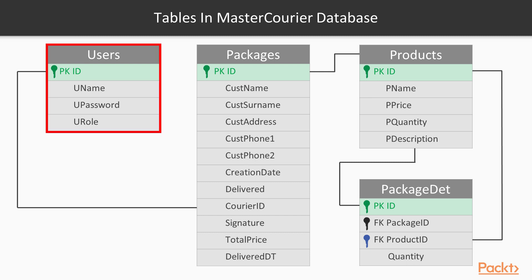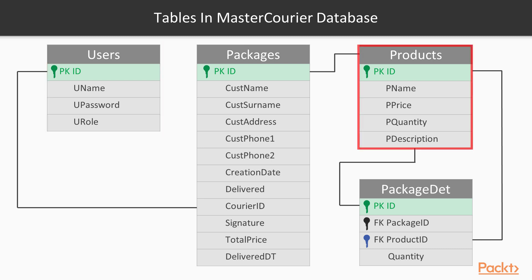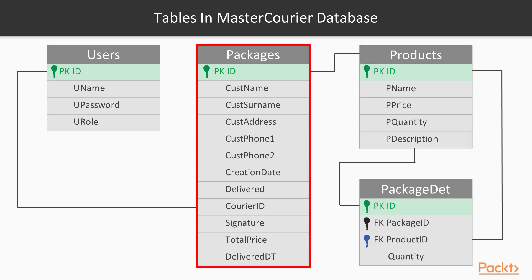The fields in the tables defined for the MasterCurier database are as follows. For the user table we will have an ID which will be auto-increment, username, user password, and user role. For the product table we will also have an auto-increment ID, product name, price, quantity, and description. In the package table we will have an ID,